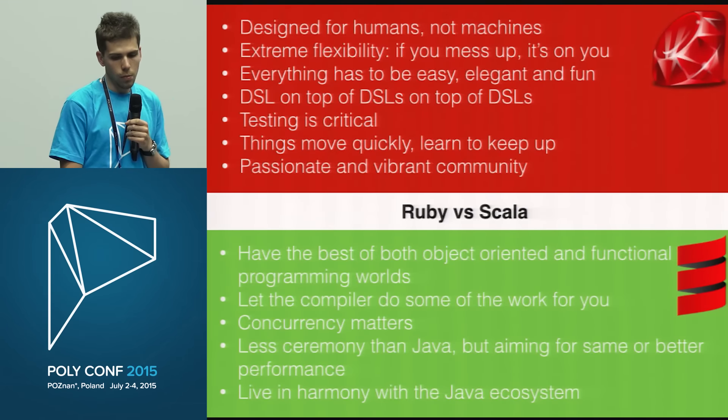What about pattern matching? Yes, we have pattern matching in both Ruby and Scala. We can just case a value, and then check what the type of this value is and print a corresponding message. We can do the same in Scala — we can also check types and print the corresponding message. As you can see, it's pretty similar.